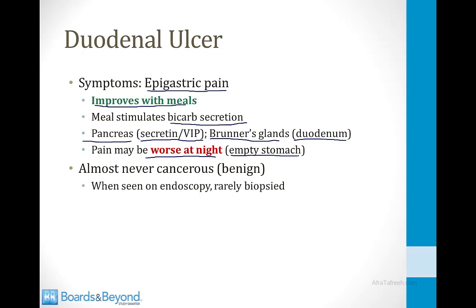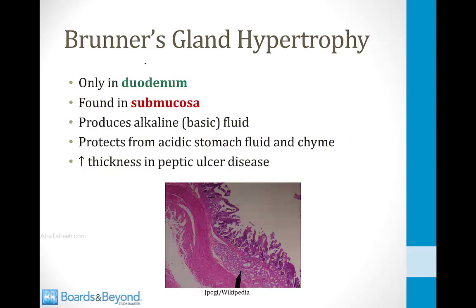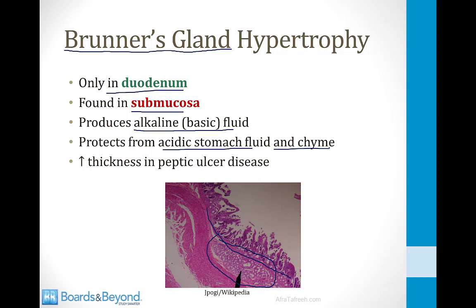When you see a duodenal ulcer on endoscopy, it's important to note that duodenal ulcers are almost never cancerous — they're almost always benign and rarely biopsied. A high-yield finding in peptic ulcer disease is hypertrophy of Brunner's glands, found only in the submucosa of the duodenum. These glands produce alkaline fluid to protect the duodenum from stomach acid. In patients with peptic ulcer disease, because the duodenum is constantly exposed to high acid, you will see increased thickness of the Brunner's glands on biopsy.